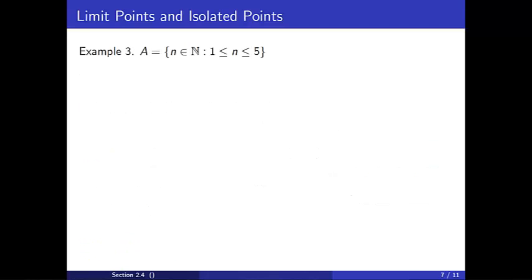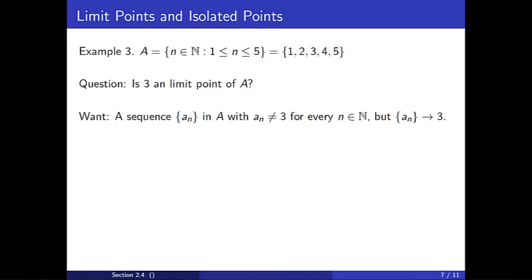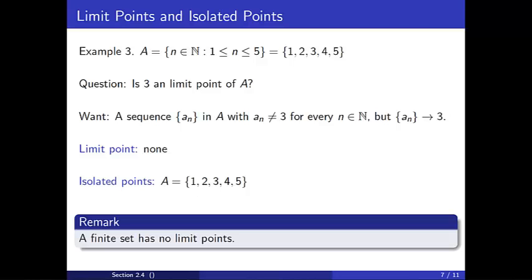For a final example, let A be the set of natural numbers between 1 and 5 — simply {1, 2, 3, 4, 5}. Is 3 a limit point of A? Is there a sequence of points in A, none equaling 3, converging to 3? The only remaining numbers are 1, 2, 4, and 5, so no such sequence exists. Similarly, 1, 2, 4, and 5 cannot be limit points either. Therefore A has no limit points, and all points in A are isolated points. Notice this will be true of any finite set — a finite set has no limit points.